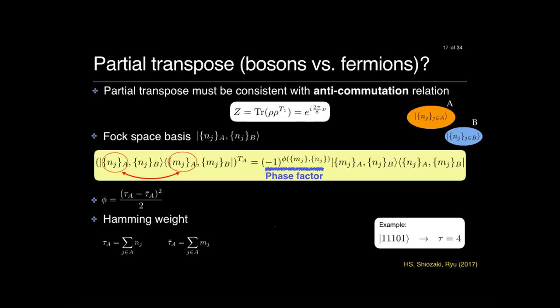Question: Can you explain what is the inconsistency if you don't include this phase factor? My impression was that it was just a different definition. Answer: There are multiple levels of inconsistencies. One thing is that without the phase, this quantity actually vanishes — it's identically zero — and we are hoping to get a non-vanishing partition function in the topological limit. Another immediate example: when you compute negativity for the Kitaev-Majorana chain, which is a topological phase with entanglement between two complex fermions, if you don't include this phase factor, you get zero entanglement. There are other inconsistencies as well.